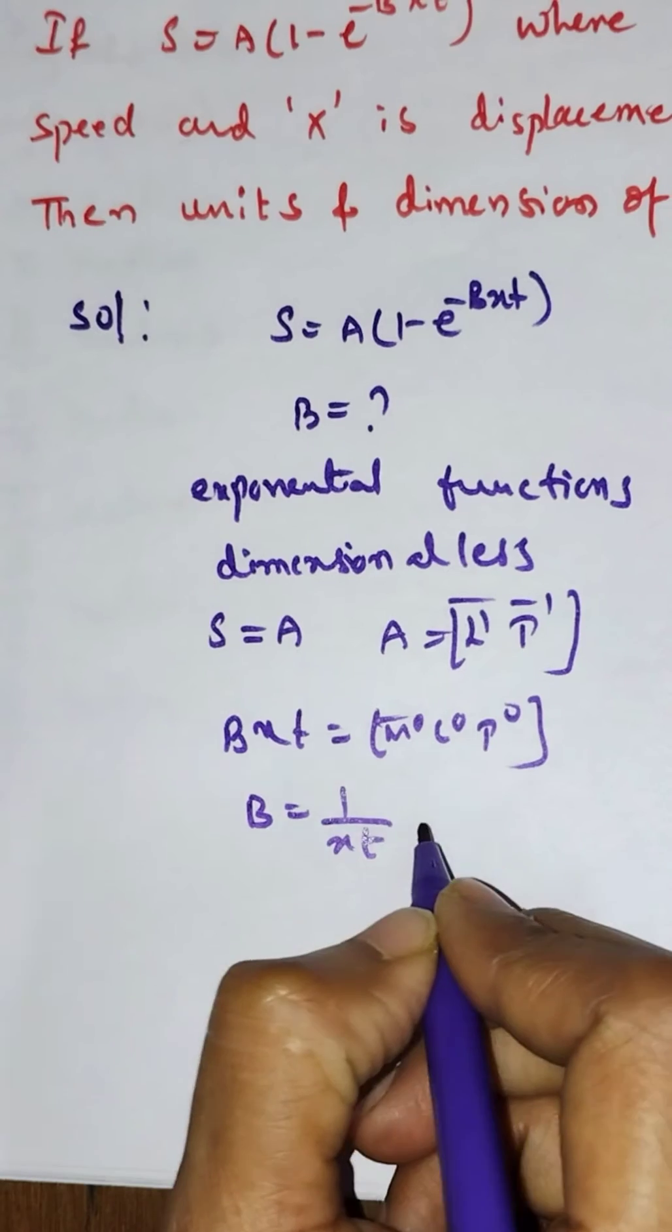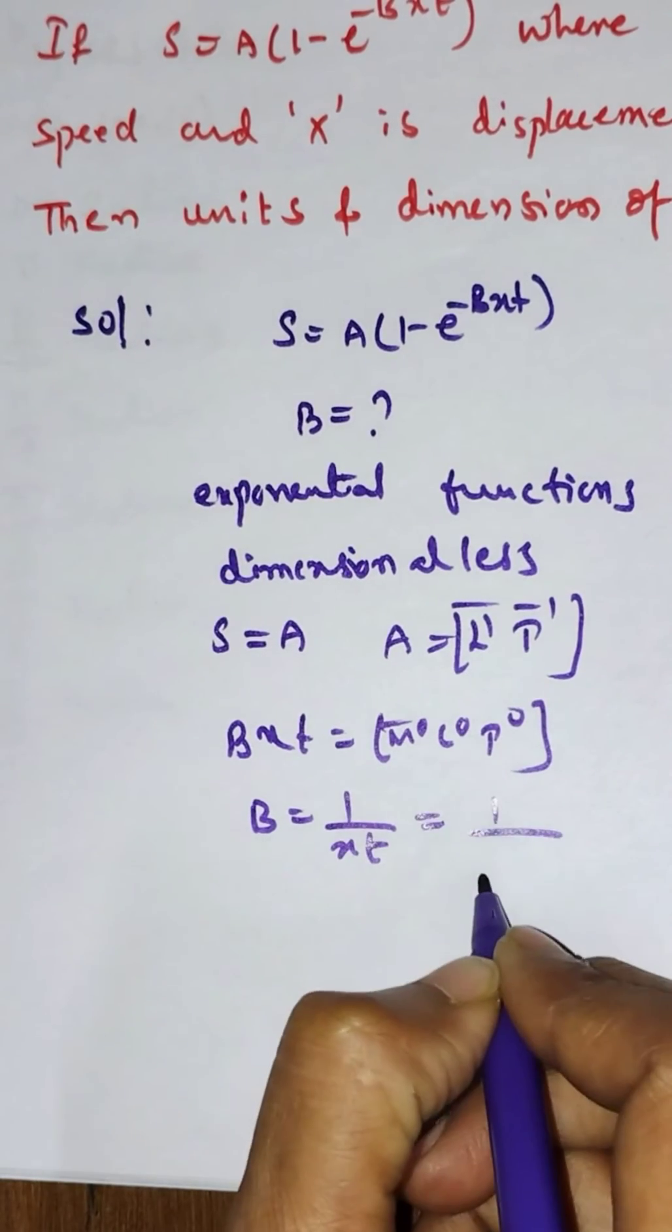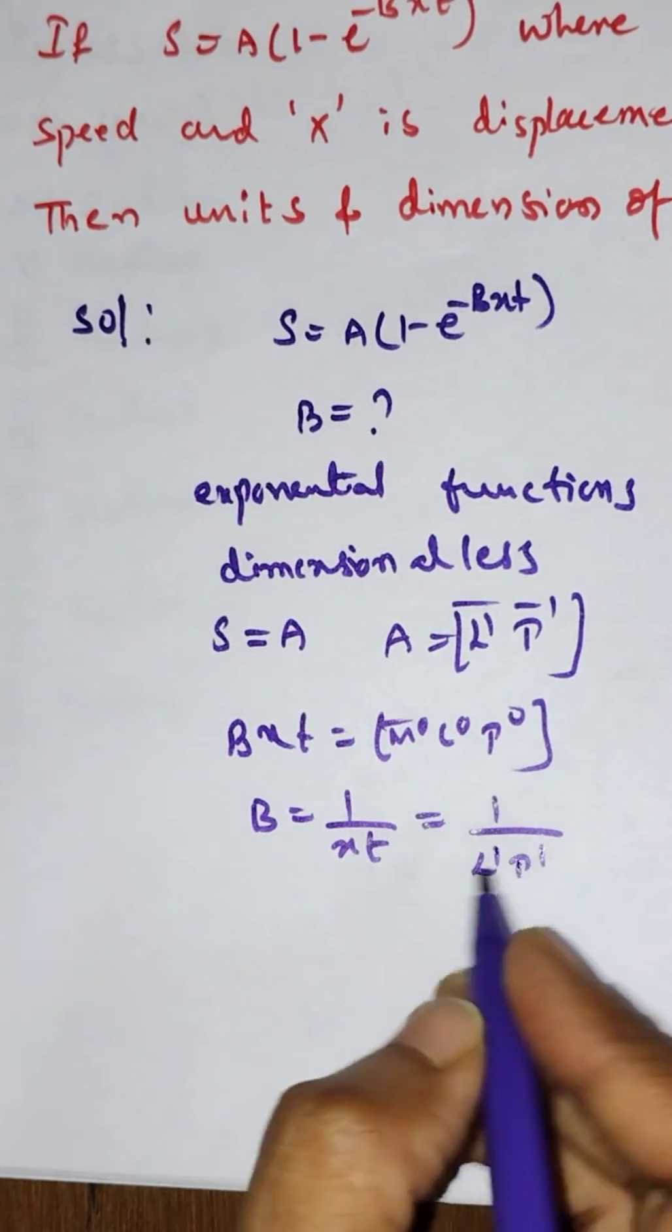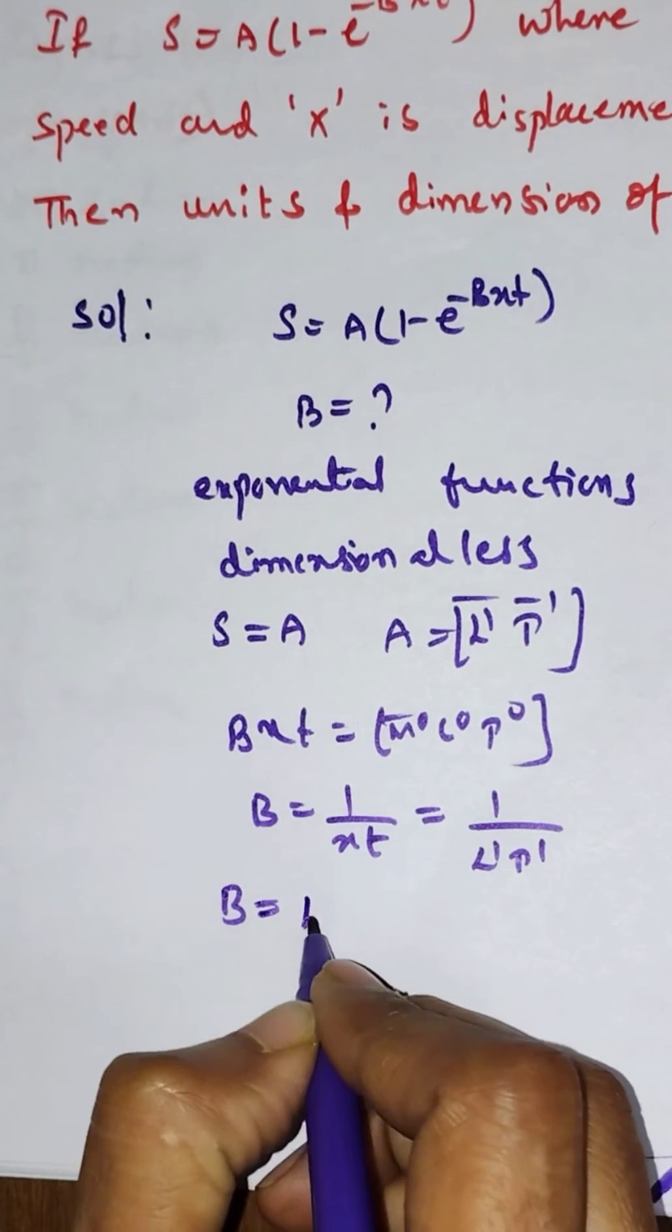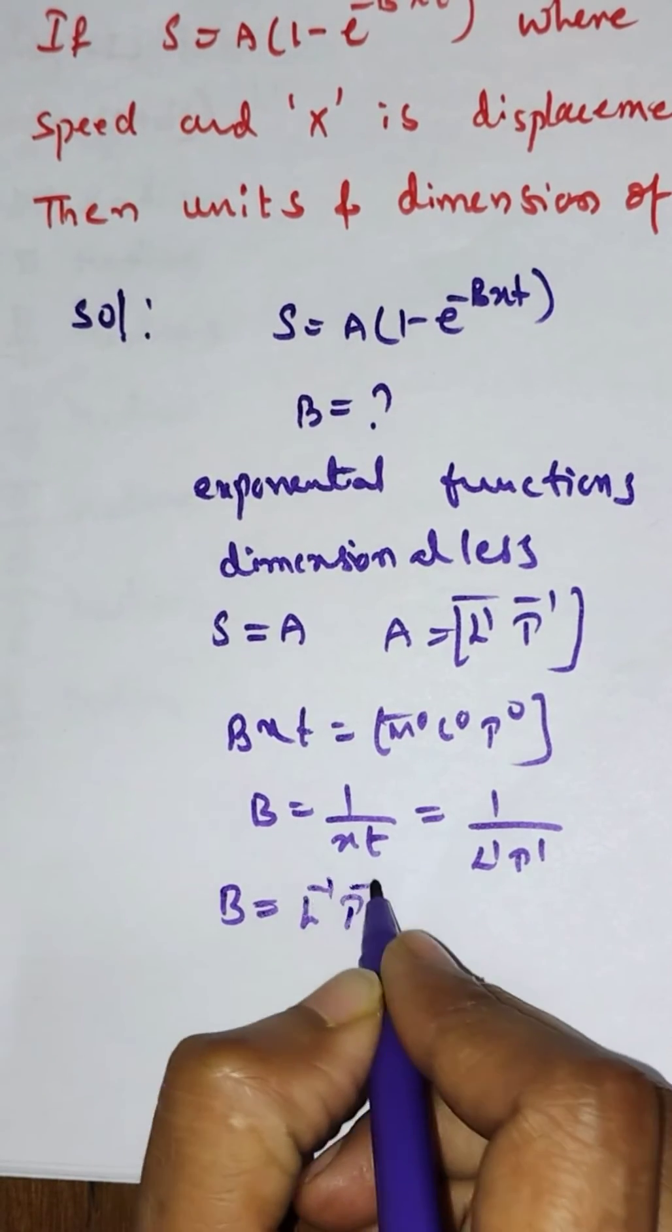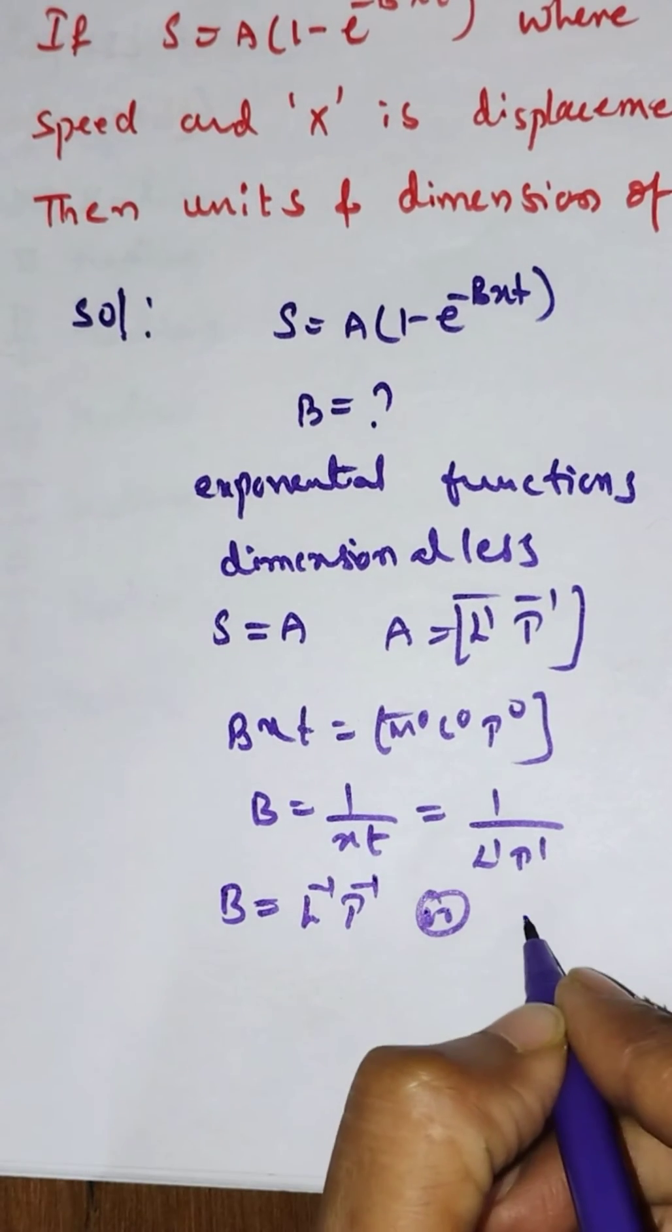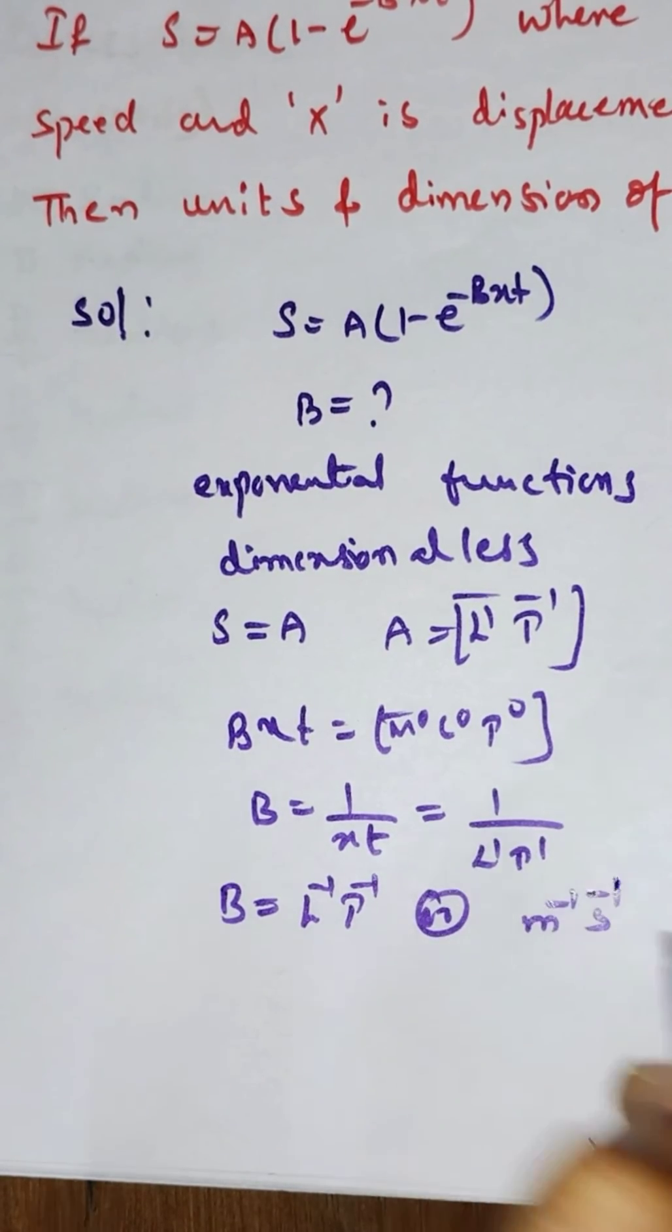Here x is displacement and t is time, so [L^1][T^1]. Therefore, B has dimensions [L^-1 T^-1], and the units are meter^-1 and second^-1. Thank you.